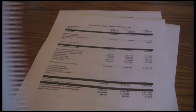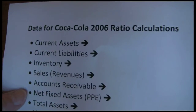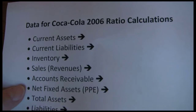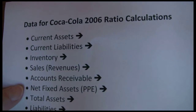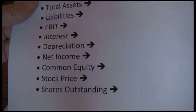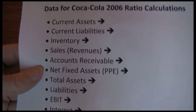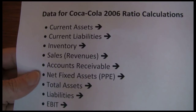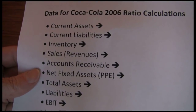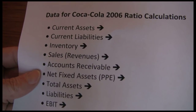Looking at our list of financial ratios, there are several pieces of information we're going to need: current assets, current liabilities, inventory, sales or revenues, and so on down the list. All these pieces of information are available on the financial statements attached in the handout. The first thing we're going to do is gather that information, which will make it easier when we get around to doing the calculations.